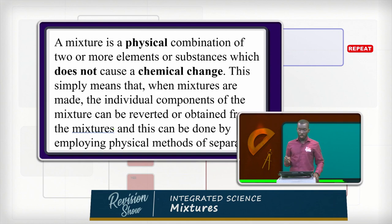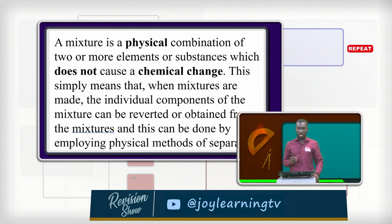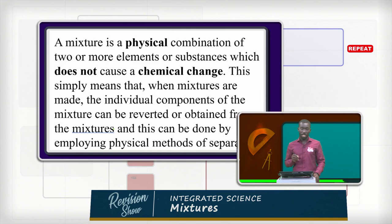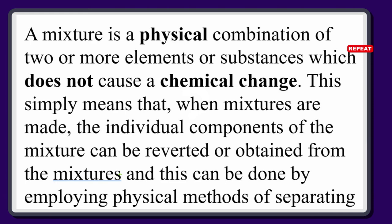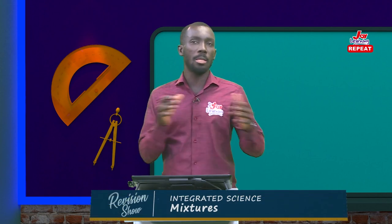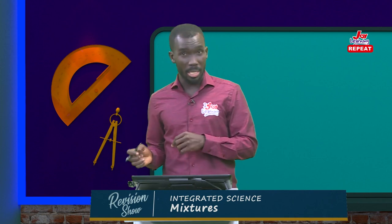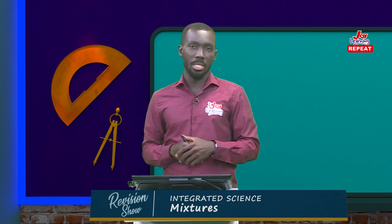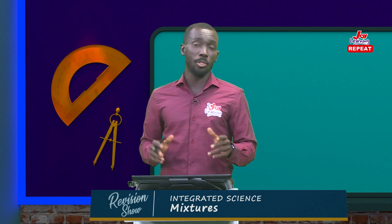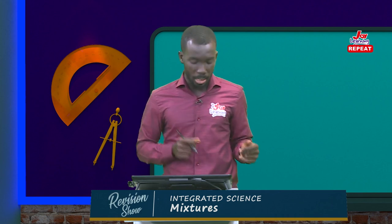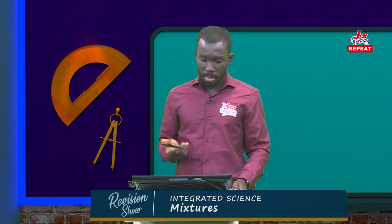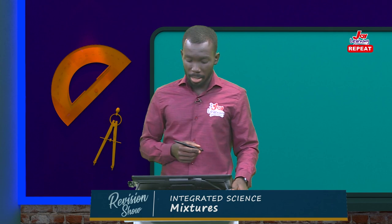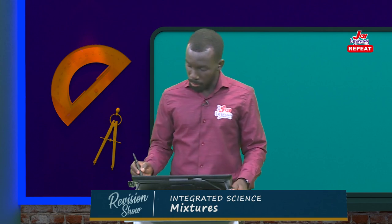A mixture is a physical combination of two or more elemental substances which does not cause a chemical change. It means that mixtures do not go through chemical change — mixtures always go through physical change. This physical change is what makes it possible to separate the different components of a mixture. You can obtain the individual components because it is a physical change, so you can recover the different constituents or compositions from the mixture.